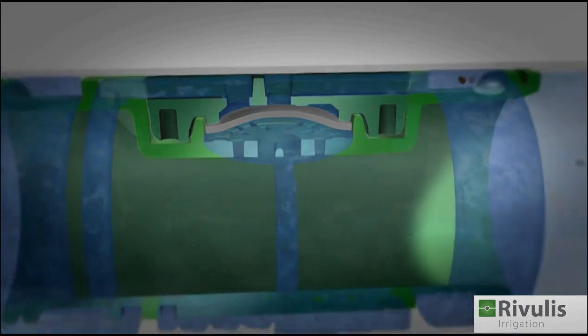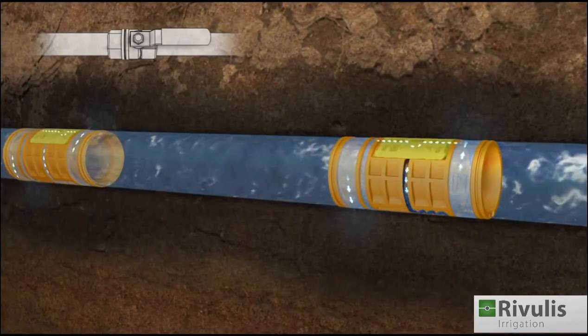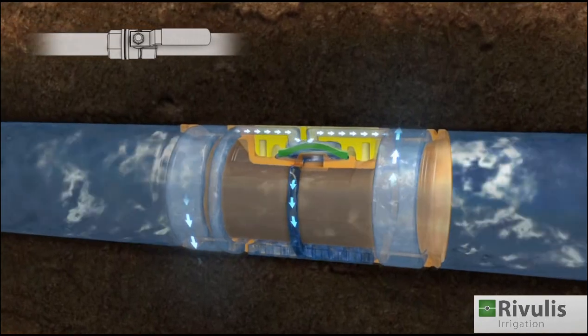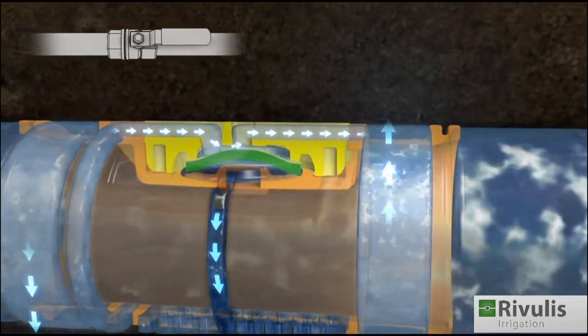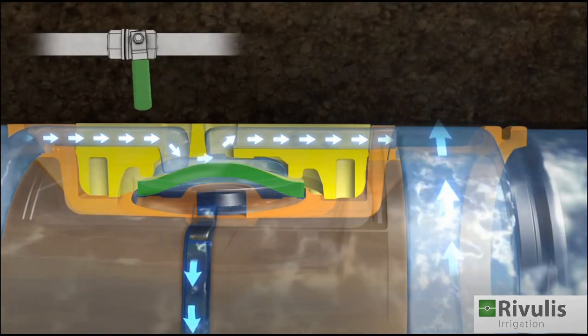The Hydro PC and D, with its no-drain drippers, is especially designed for pulse operation and subsurface irrigation. The no-drain mechanism protects the drip line from soil particle infiltration when the water is shut off.